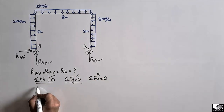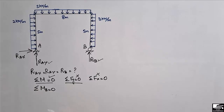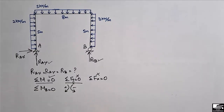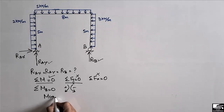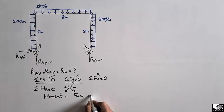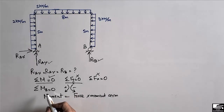Since we have two unknowns, we use the moment equation: summation of moments at point B equal to zero. Clockwise moment is taken as positive and anti-clockwise as negative. The moment is calculated using the formula: force multiplied by the moment arm.